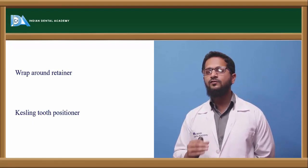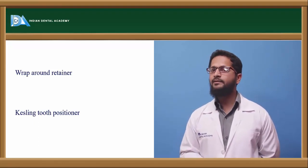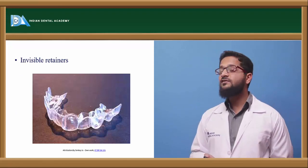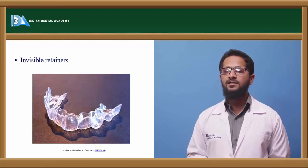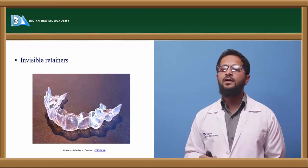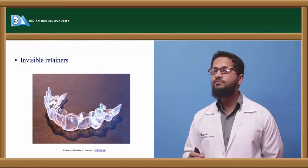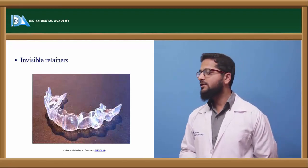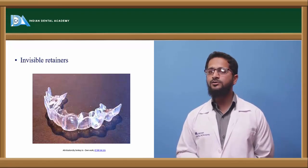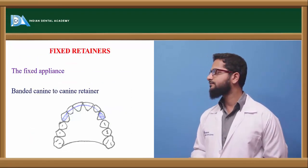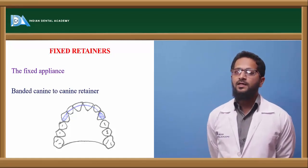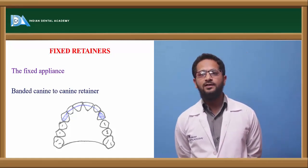The Kesling tooth positioner is a very good retainer for maintaining stability, but since it extends over the occlusal areas, there is a risk of temporomandibular joint problems. Invisible retainers are made of ultra-thin thermoplastic material fabricated using a Biostar machine. They are usually easily accepted by the patient since they go unnoticed.